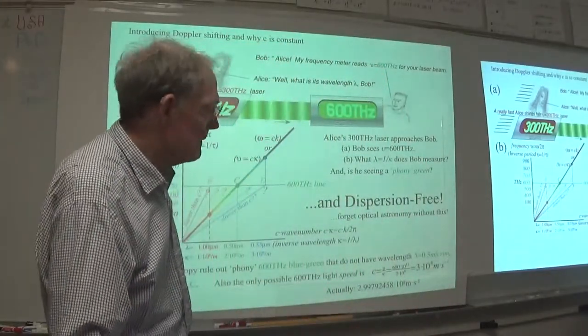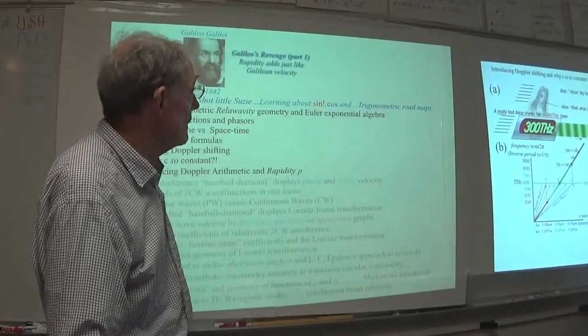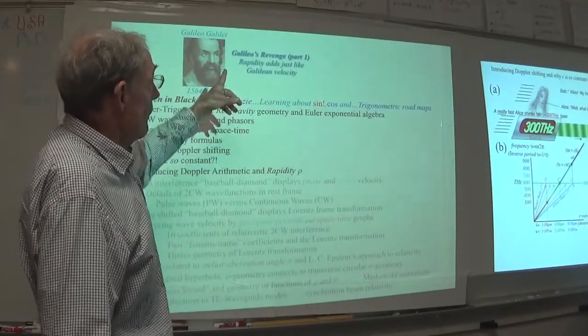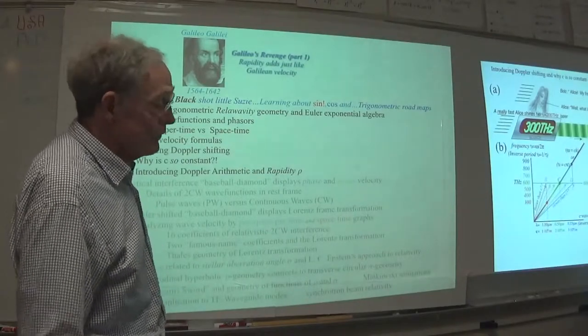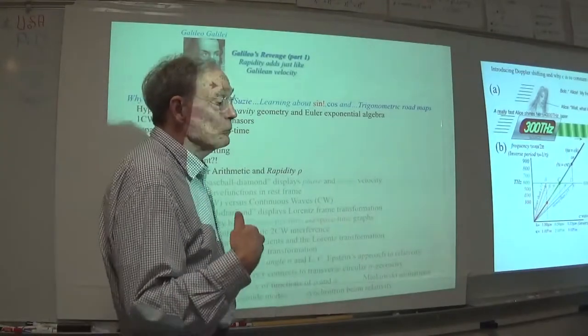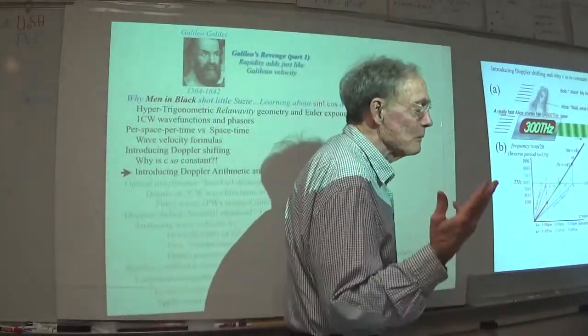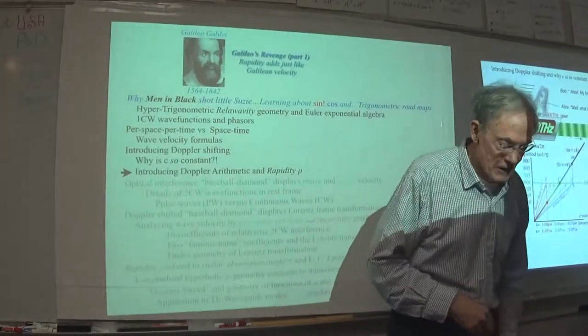That's what would happen if you even broke the speed limit of C by the tiniest amount. That make sense? So what we're going to do is find a way to measure that speed that is really convenient. And this is the rapidity idea - the logarithm of the Doppler shift.